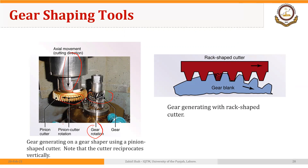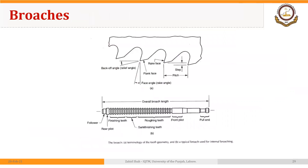Here we have a pinion cutter — it is rotating, but it is also moving up and down. The movement of the blank is very slow, as is the rotation of the cutter. But the up-and-down movement of the cutter is generally very fast. Apart from a pinion-shaped cutter, we could have a rack-shaped cutter as well. You could see the details in the video in the description. Gear shaping can be used to make both internal and external gears.